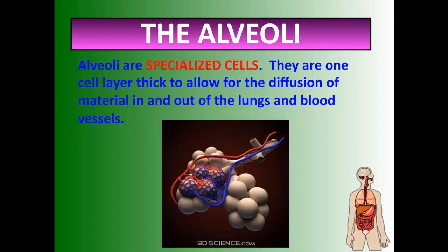Just like capillaries are specialized, alveoli are specialized — they are one cell layer thick to allow for diffusion of material in and out of the lungs. Each alveoli sac is covered with capillaries, and because both the capillaries and the alveoli are so thin, this gas exchange can happen instantly and with ease.